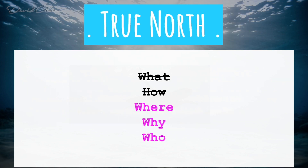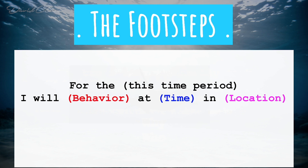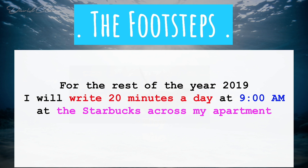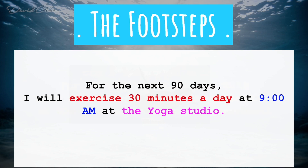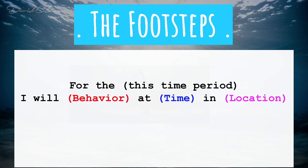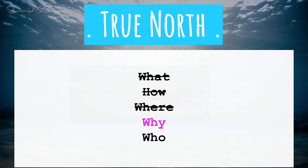Define one first easy step as your two-minute gateway to get your foot in the door of that habit. Now we've covered the how — the action steps of our one goal. Let's establish the where, why, and who. For where: come up with a time period, a behavior, and a location for your activity. Example: 'For the rest of 2019, I will write 20 minutes a day at 9 AM at the Starbucks across from my apartment.' Or: 'For the next 90 days, I will exercise 30 minutes a day at 9 AM at the yoga studio.'